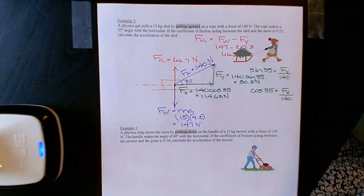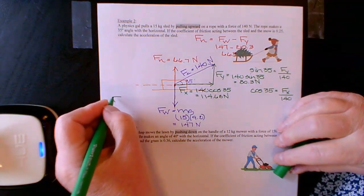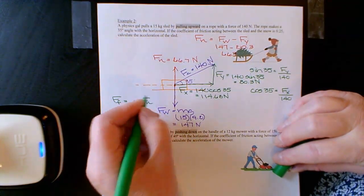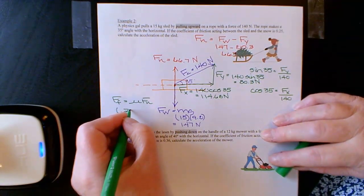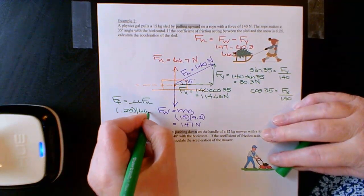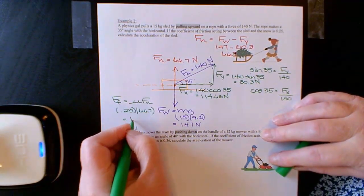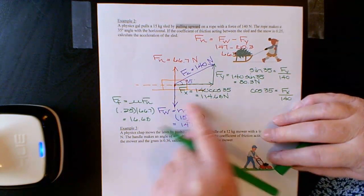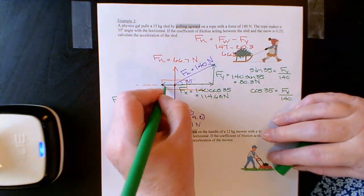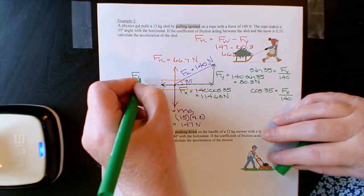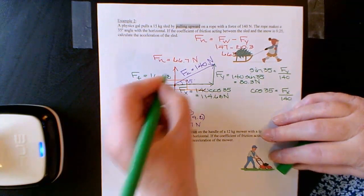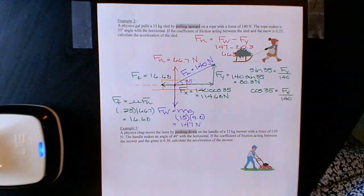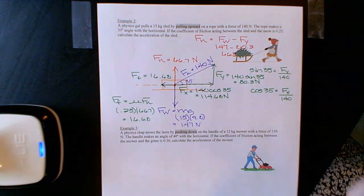We still have friction in our story, so I'll calculate the frictional force: mu times Fn equals 0.25 times 66.7, which equals 16.68 newtons. I'll draw that as a shorter arrow and label it in the picture. So we have everything in our free body diagram and can now calculate the acceleration of the sled.